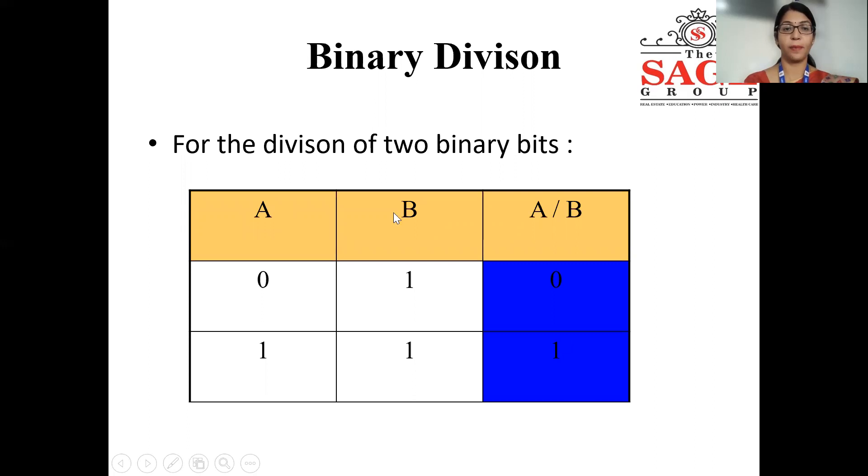Fourth operation is division operation. To perform the division of two binary bits, 0 divided by 1, in the result you will get 0 only. 1 divided by 1 will be 1 only.